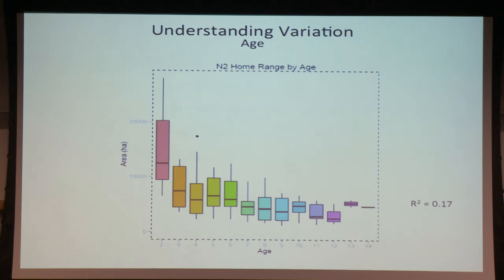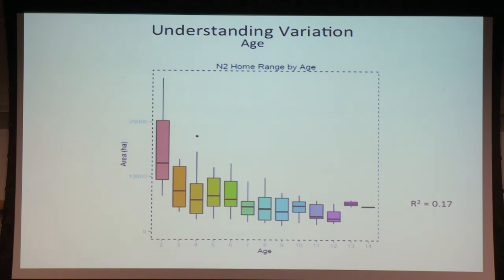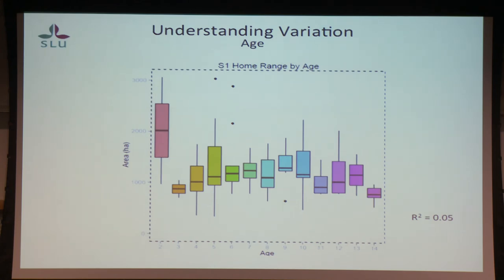If we look at age — here we're looking at the north — you can see a trend with age, especially between age two and age three. The ages range from two to 14, and there's a correlation of about 0.17, which obviously isn't strong, but there's a slight effect. In the south, again you see this gap between age two and three, but here the correlation is much weaker, or essentially non-existent, other than that two-to-three transition.